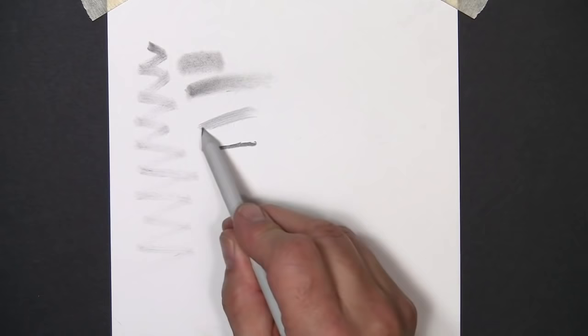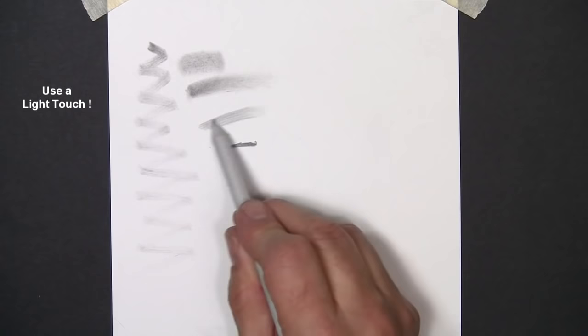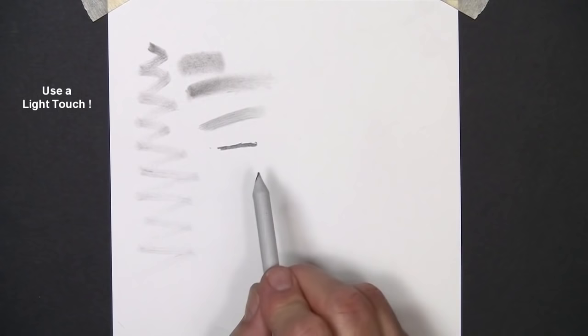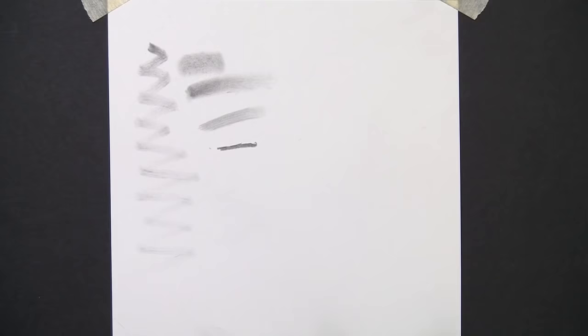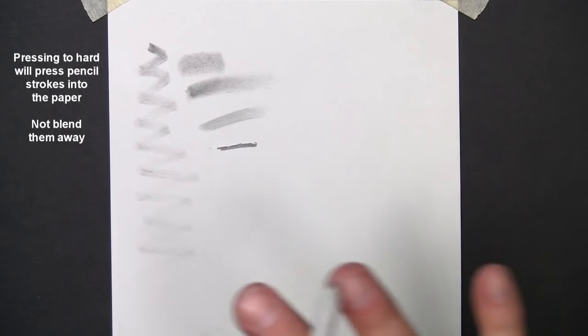I can blend those strokes away to where you can barely see them if I use a light touch. Some people think that you have to push very hard with any kind of blending tools to move that graphite or charcoal over. Actually, what happens if you push really hard? You grind those pencil lines into the paper, and they won't come out.